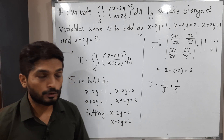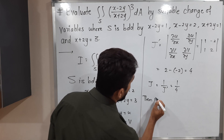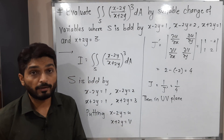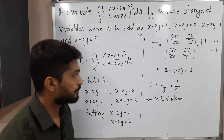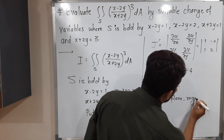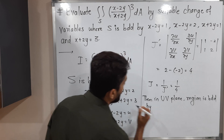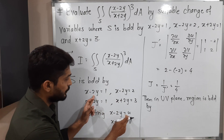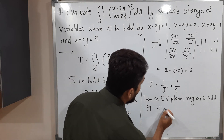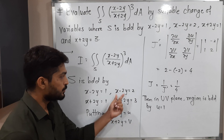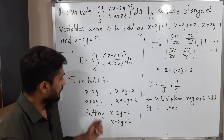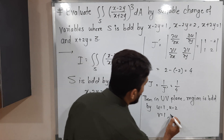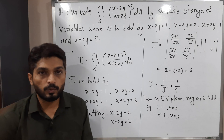Now let us talk about the region. In the uv-plane, the region is bounded by these four simple lines. Since x minus 2y = u, the boundaries x minus 2y = 1 and x minus 2y = 2 become u = 1 and u = 2. Since x plus 2y = v, the boundaries x plus 2y = 1 and x plus 2y = 3 become v = 1 and v = 3.